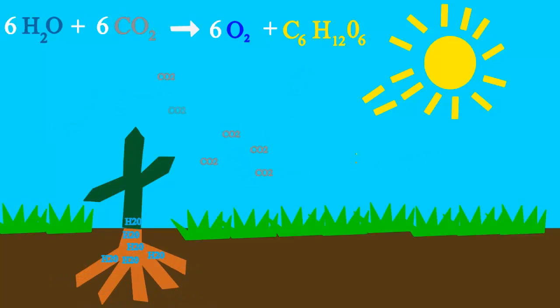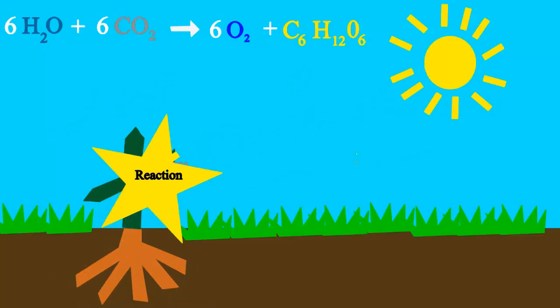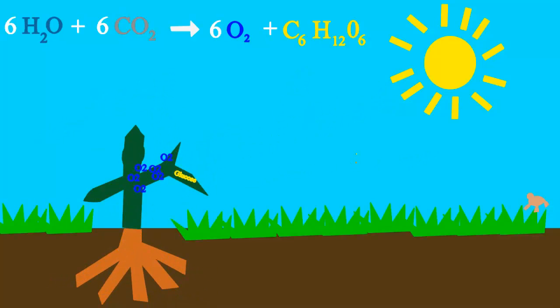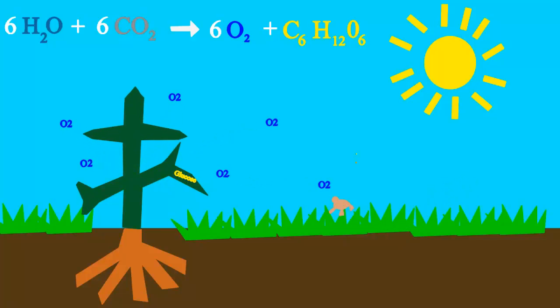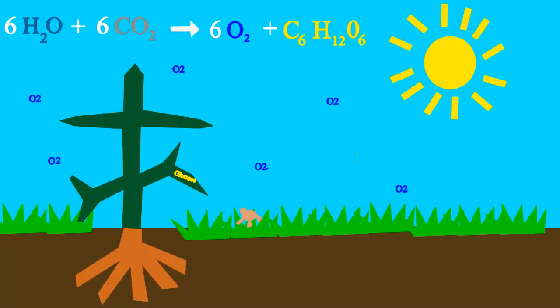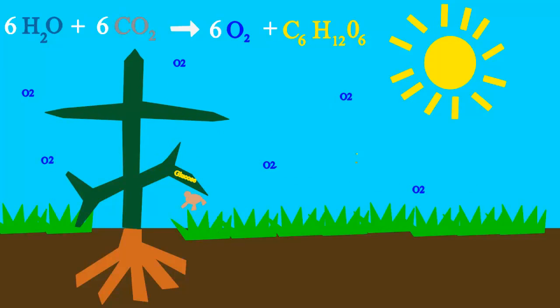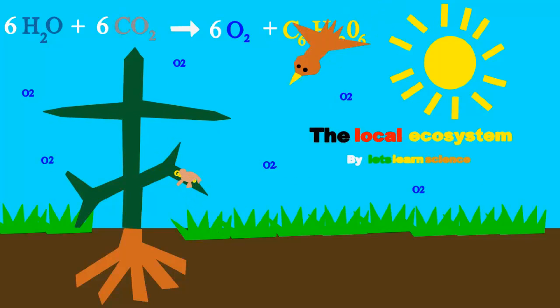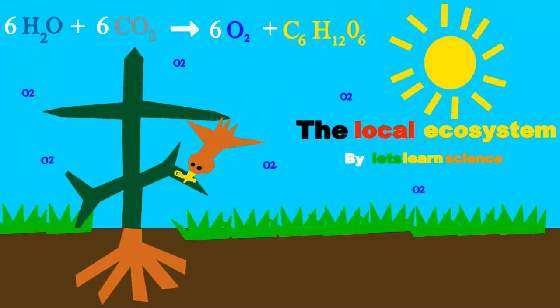Plants take water, sun and CO2 to make glucose, the sugar that they use for food. They also put oxygen into the air so we can breathe because oxygen is everywhere.